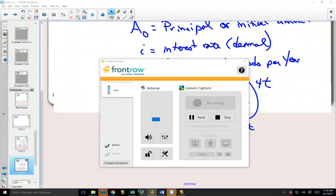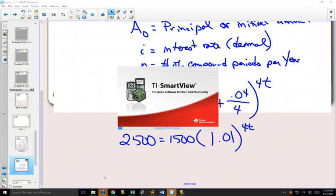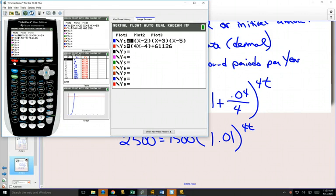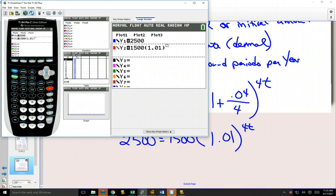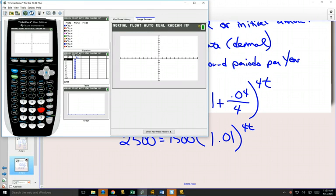So taking out my calculator, clearing out what we have from before, if I put 2500 into y1 and I put 1500, bracket, 1.01 to the power... Now if you have a newer calculator where your power goes up like mine did, you can just write 4x in your power. If you have an older calculator that when you push the power button the little hat thing still shows up, then you're going to need to put that 4x in brackets because it'll only put the first number as the power unless you have brackets there.